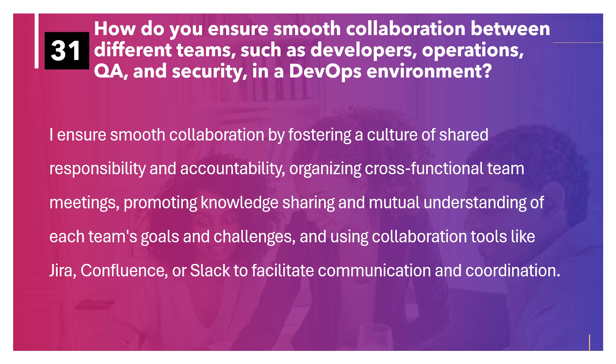How do you ensure smooth collaboration between different teams such as developers, operations, QA and security in a DevOps environment? I ensure smooth collaboration by fostering a culture of shared responsibility and accountability, organizing cross-functional team meetings, promoting knowledge sharing and mutual understanding of each team's goals and challenges, and using collaboration tools like Jira, Confluence or Slack to facilitate communication and coordination.